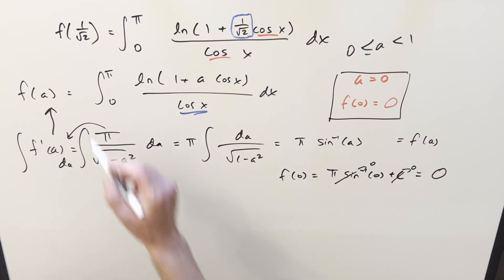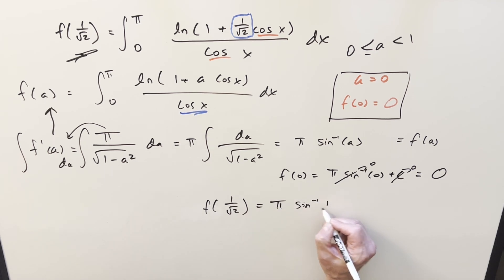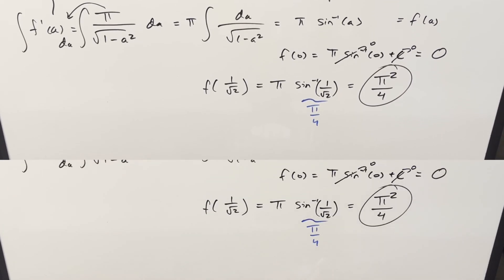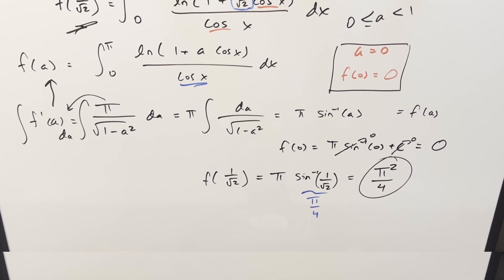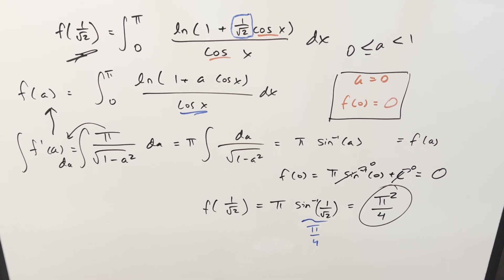So all I need to do to finish it off is getting back to this, we just need to plug in one over square root of two. So what we want is f of one over square root of two. That's going to be pi arc sine of one over square root of two. This value here is going to be just pi over four. Multiply it together for my final solution. We just get pi squared over four. Okay, there you go. Good one today with Feynman's trick. Thanks everyone for watching. Have a good day.